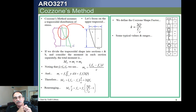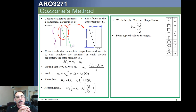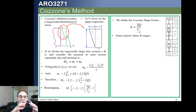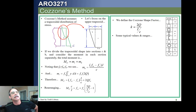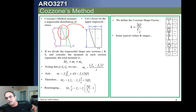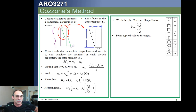A rectangular section is going to have a Cozzone shape factor of 1.5. An hourglass section gives four-thirds. A diamond, which has even more area at the centroid, gives 2.0. A circle also has a lot of material near the neutral axis, so that's 1.7. Most other sections will be somewhere between about 1.0 and 1.5. This method only applies for symmetric cross-sections with symmetric stress-strain curves — it will not work for other sections and will give erroneous results.